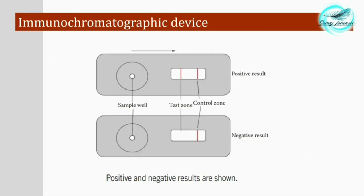Results can be read as positive or negative. The sample is loaded into the sample well. If the sample contains the glycophorin A antigen, it forms a complex with the antibody and is captured at the test zone, where the immobilized antibody forms a sandwich complex. For positive results, you will get vertical red lines in both the test zone and the control zone. For negative results, you will get a vertical line only in the control zone with no line in the test zone.